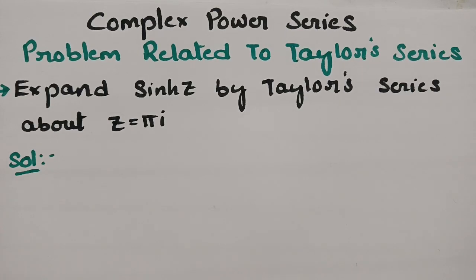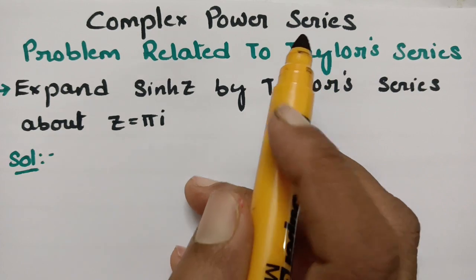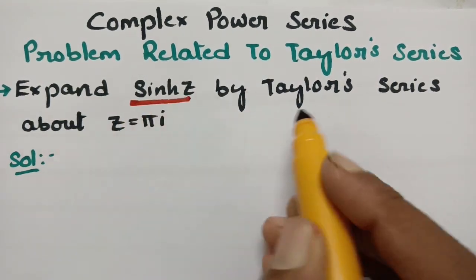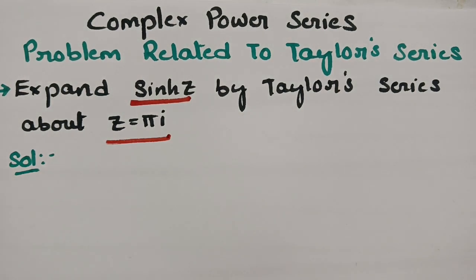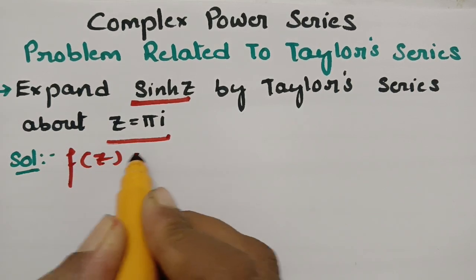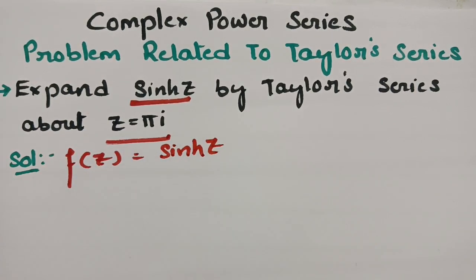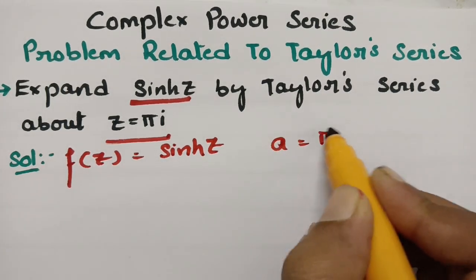Today's video is on the problem related to the Taylor series, and this topic is from complex power series. In this video we have to expand sinh(z) by Taylor series about the point z = πi. Here it is very clear that f(z) is given as the sinh function of z and the value a is given as πi.